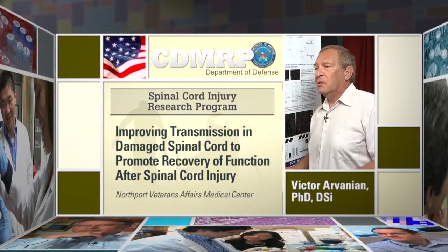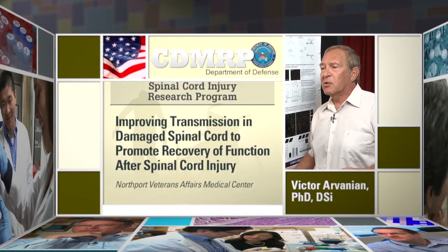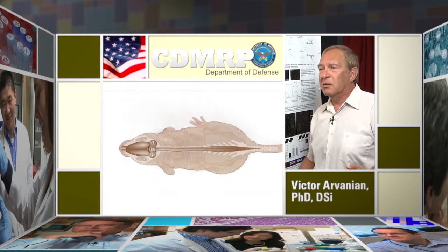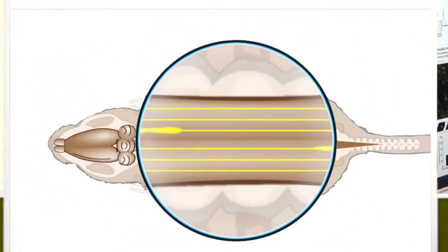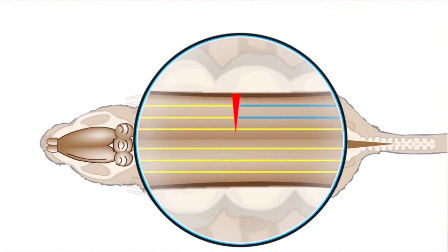Most spinal cord injuries are incomplete anatomically, meaning there are lots of fibers remaining after the injury. However, almost all injuries are complete functionally, meaning that below the level of injury there is no sensation and motor function.